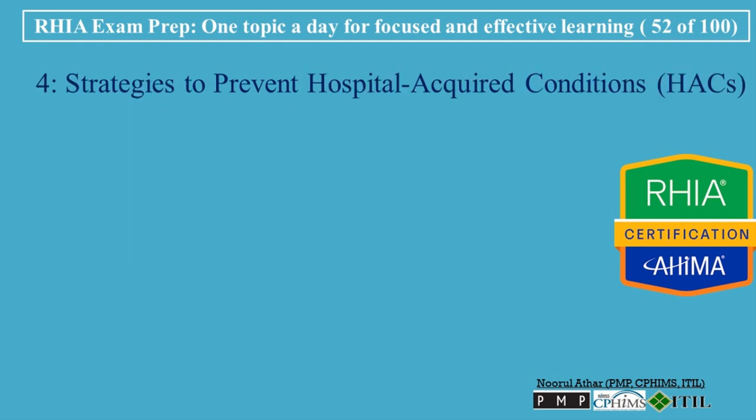Strategies to Prevent Hospital Acquired Conditions: Healthcare organizations must implement comprehensive strategies to reduce the occurrence of HACs. Infection Control Practices: Implementing strict infection control practices, such as hand hygiene, sterilization of medical equipment, and the use of personal protective equipment, PPE, is crucial for reducing healthcare-associated infections, HAIs. Regular staff training and monitoring of infection control protocols can help ensure compliance.